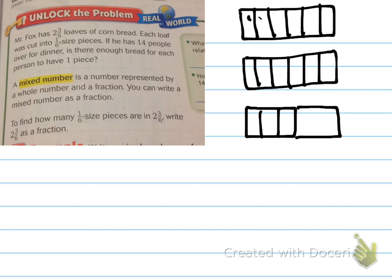Right? So, let's see how many pieces we have. One, two, three, four, five, six, seven, eight, nine, ten, eleven, twelve, thirteen, fourteen, fifteen. Well, we have fifteen slices, and fourteen people are coming over for dinner. So, yeah, we have enough slices. We have one extra left over.